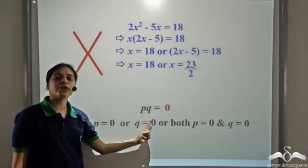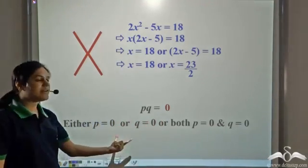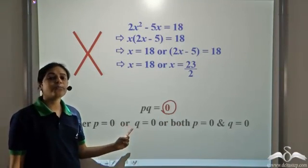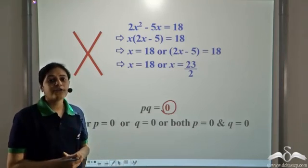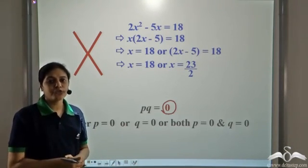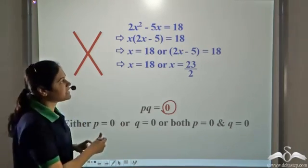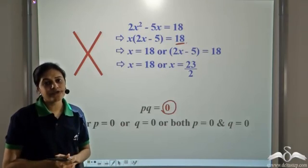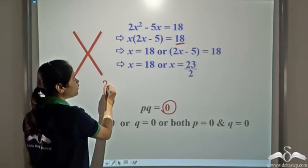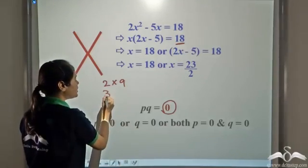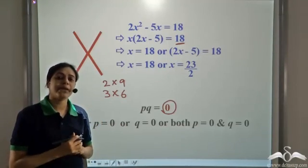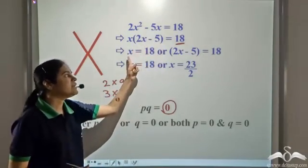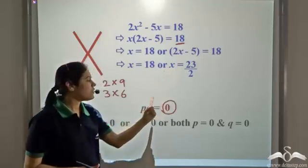The zero product rule — that if the product of two numbers is zero, either of them will be zero — holds only if we have zero on the right hand side. If the product of two numbers is any number other than zero, say 18, it is not necessary that one of them will be 18. The two numbers could be 2 and 9, or 3 and 6 — there are many more possibilities. So we cannot say that if the product of two numbers is 18, one of the numbers must be 18.